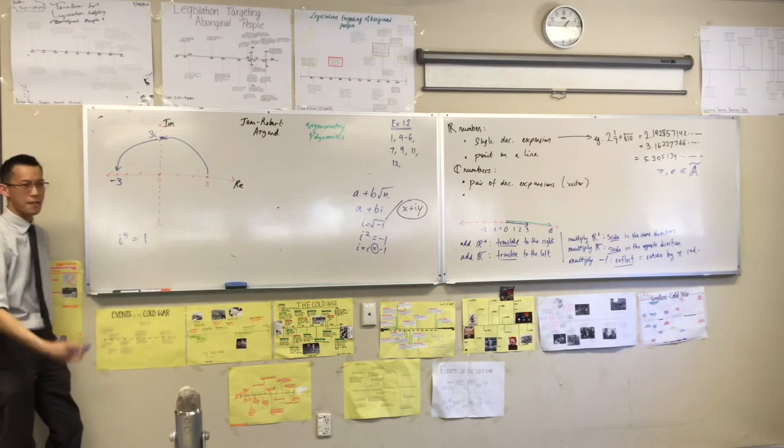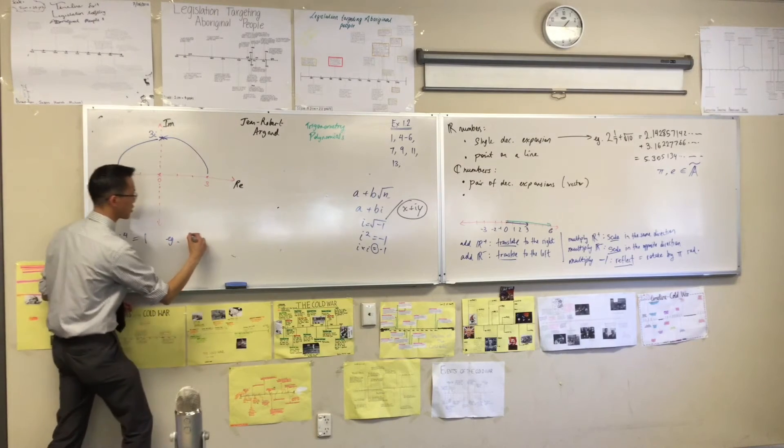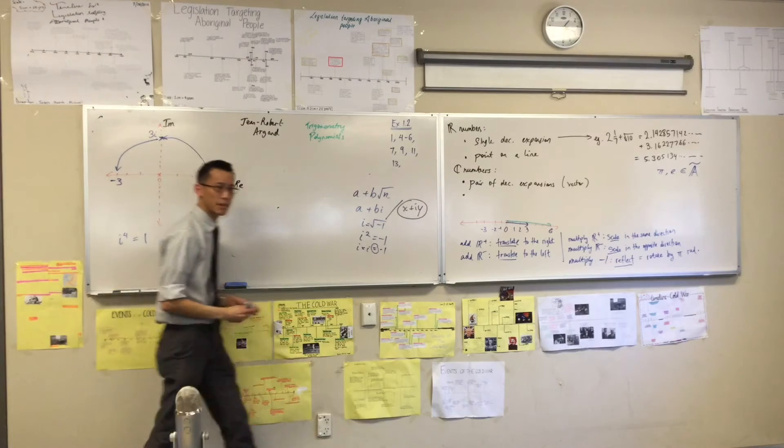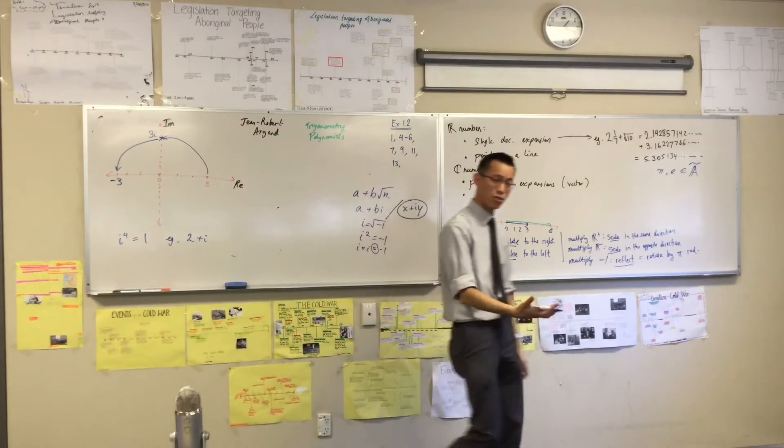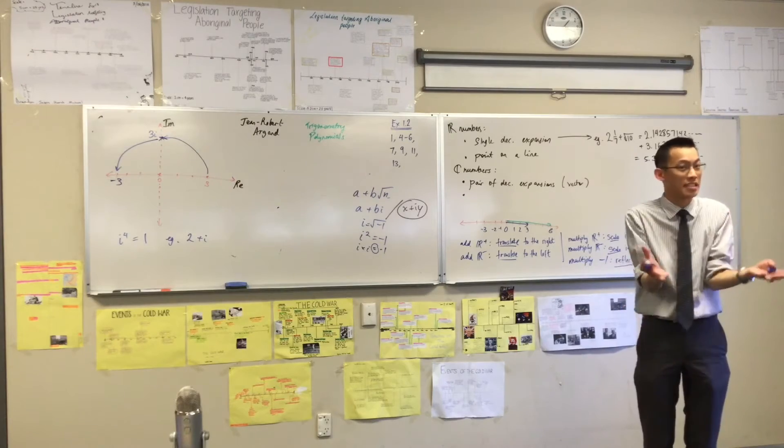So for instance, if I think of a number like, oh I don't know, as an example, let's put, where have I got some space on here? Let's go 2 plus i. There's a complex number. Your a is 2, your b is 1. It's just a single imaginary unit.